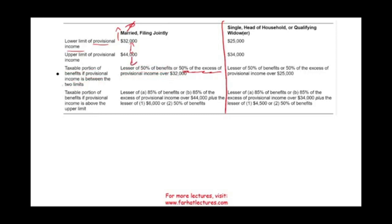If your provisional income is above $44,000, the taxable portion of the benefit is the lesser of 85% of the benefit or 85% of the excess of provisional income over $44,000, plus the lesser of either $6,000 for married filing jointly or 50% of your benefit. If you are single, there are different figures, but the concept is the same.